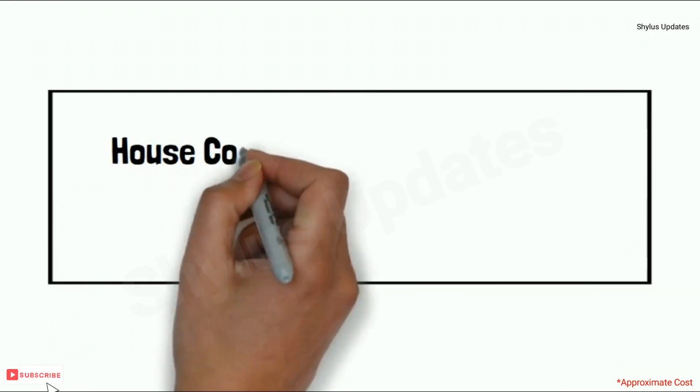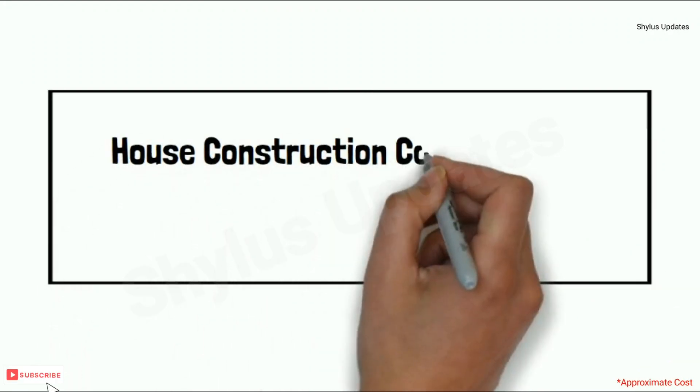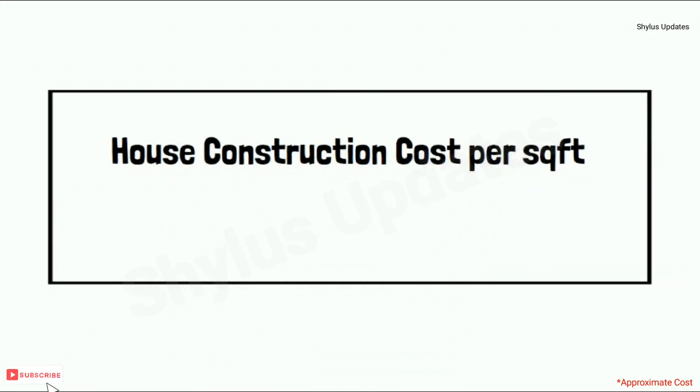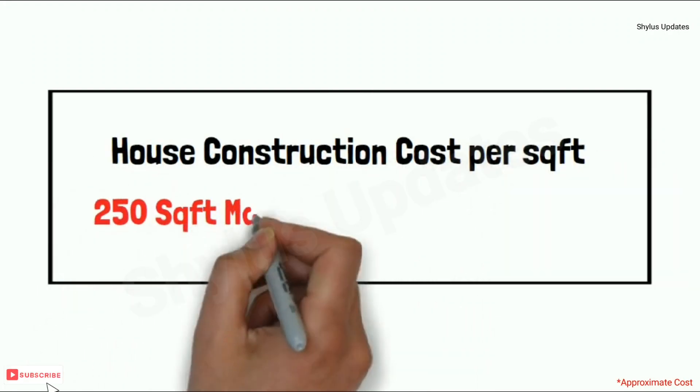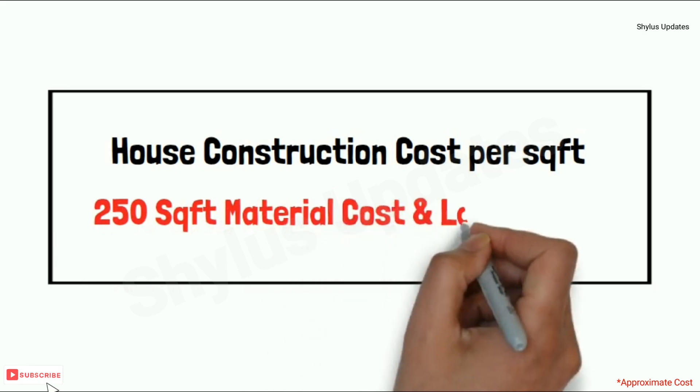House construction cost per square feet — 250 square feet material cost and labor cost.